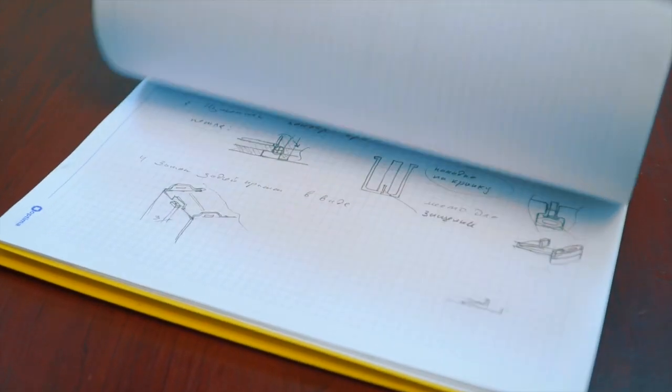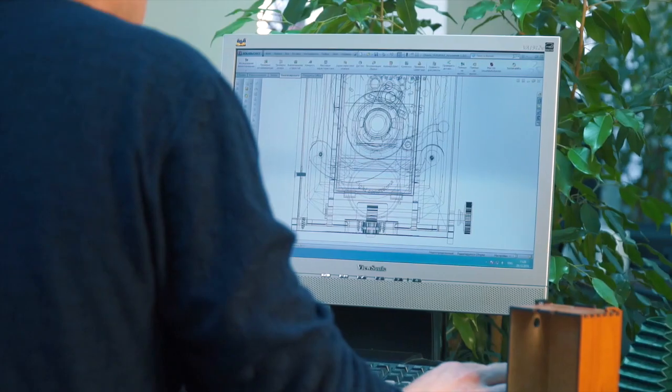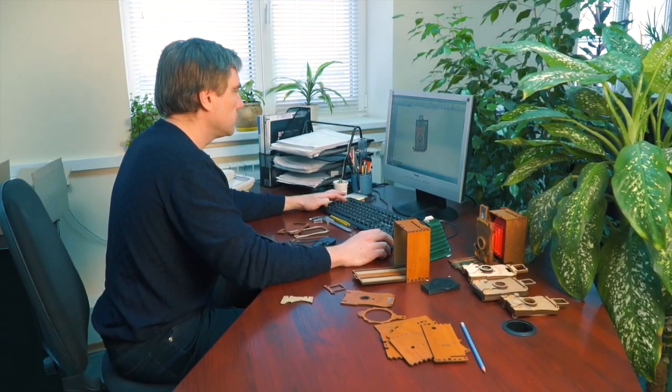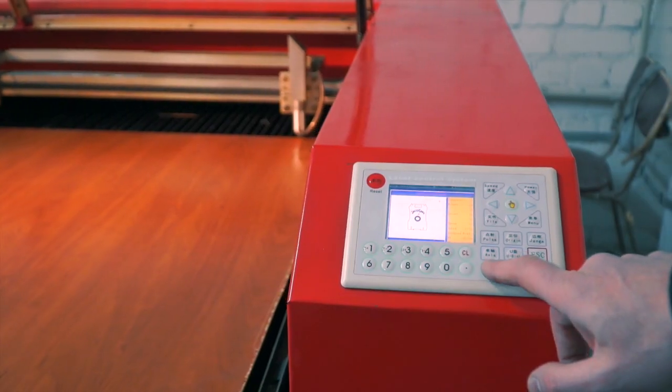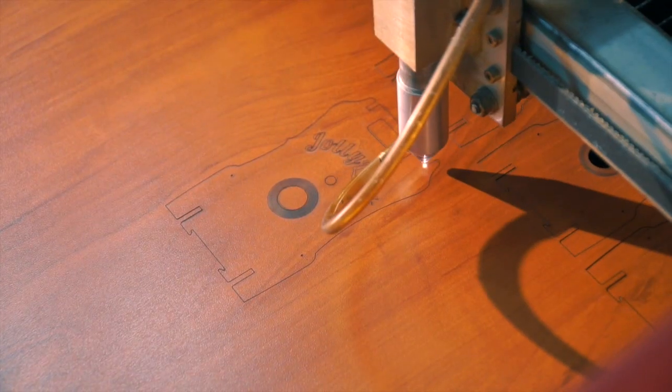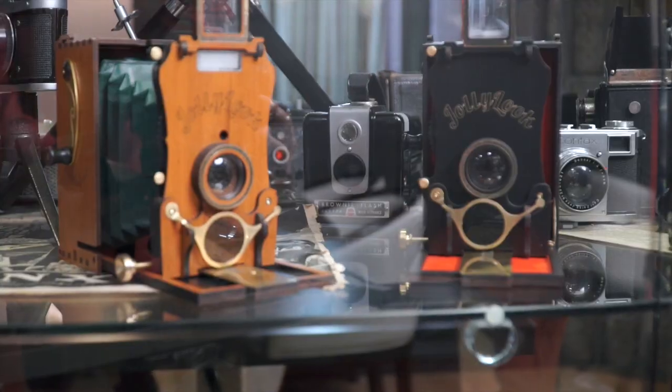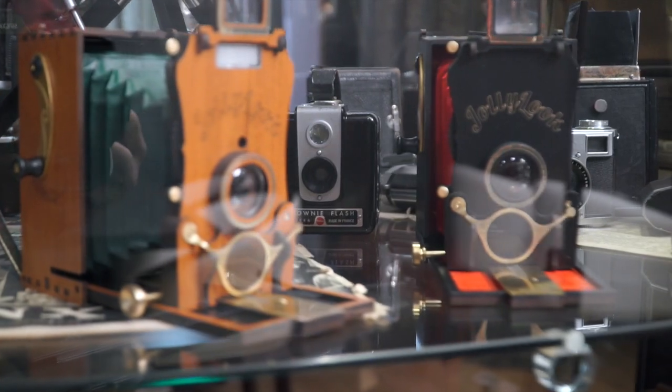We went through an extensive process to design the Jolly Look Auto, from initial sketches to full computer-aided design. Along the way, there were many iterations and prototypes until we achieved a harmonious combination of form and function.